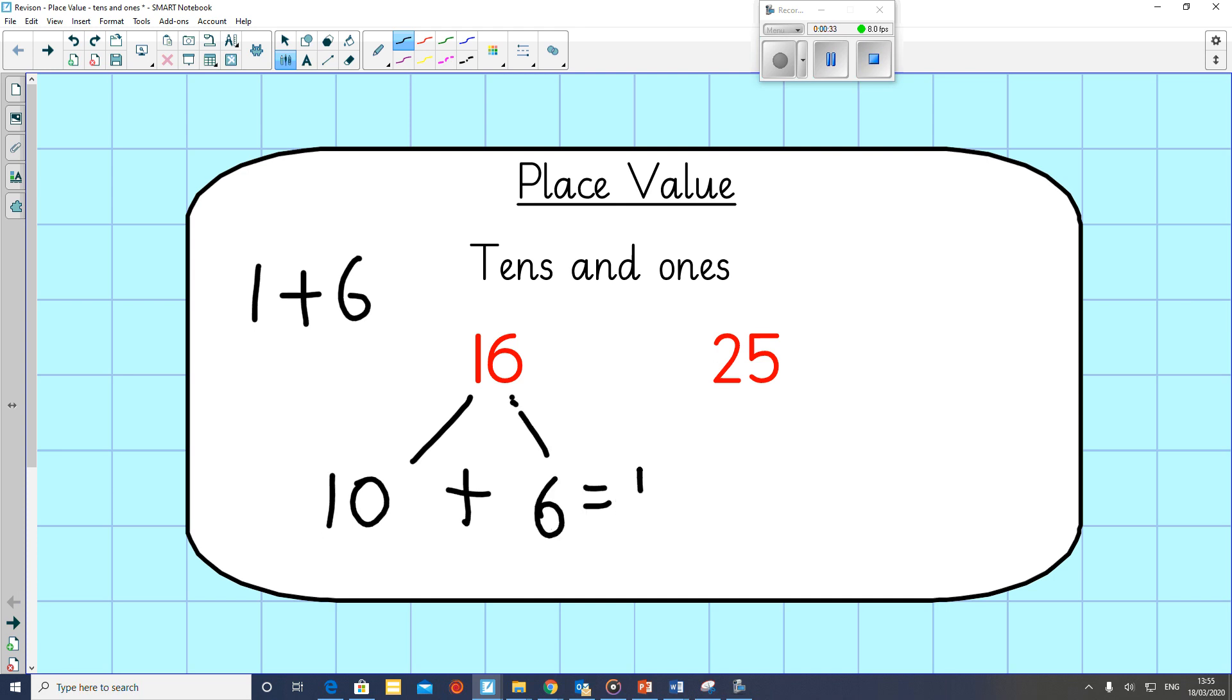And together we can total 16. Similarly, with 25, it is not made from 2 and 5. It's not a total of 7, as we talked about here. 7 ones would be wrong.